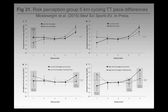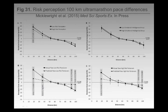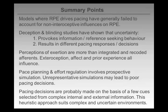That's quite interesting — an individual trait about how they perceive risk then transpires in terms of what actual pacing strategy they adopt. This was in five-kilometre time trials. We also saw this in ultramarathon runners: those with higher perceptions of risk tended to adopt a slower starting pacing strategy, which is quite interesting. So risk perception as an individual difference is also quite important to pacing.